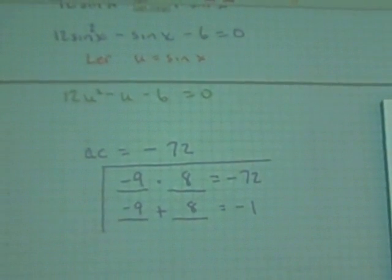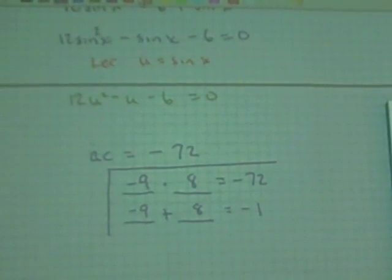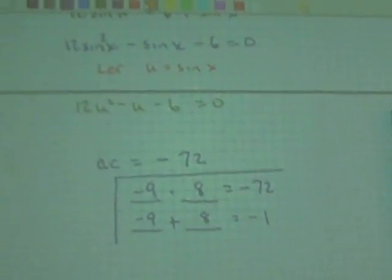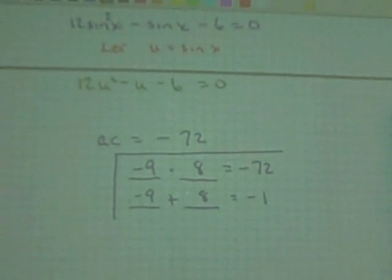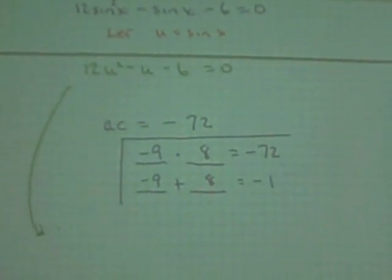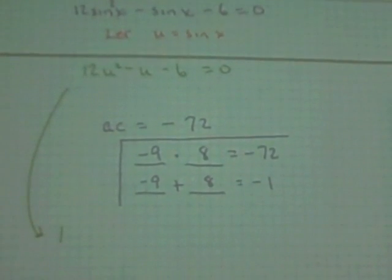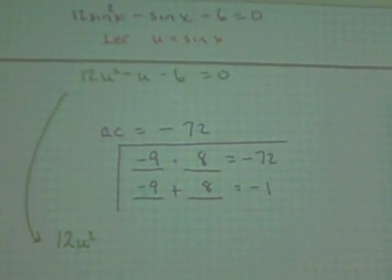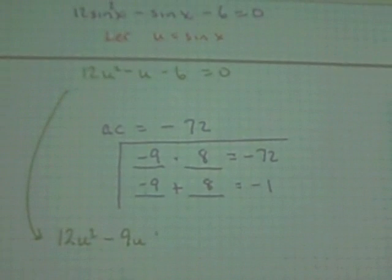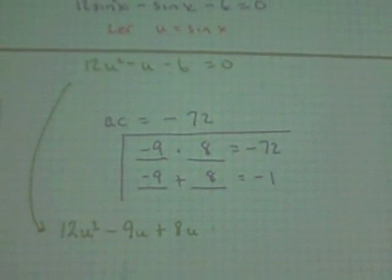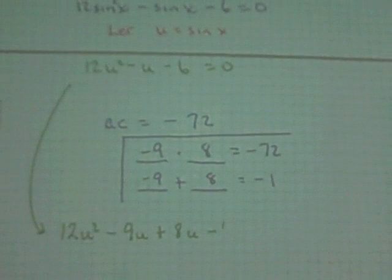So what do I do with those two numbers? Very good. Now rewrite the middle term using those two numbers. Then you group them. That's exactly right.